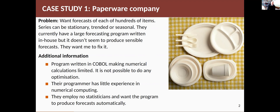The data was monthly and it could have trends, it could be seasonal — there were all sorts of different patterns in the data. They had a forecasting program written in-house, but they didn't trust the results. They said it was not giving sensible forecasts and they wanted to know if I could fix it. The program was written in COBOL, a very old computer language from the 1960s, which made numerical calculations quite difficult. So it wasn't possible to implement any forecasting model that needed optimization. Their programmer was an expert in COBOL but had very little experience in numerical computing, and they employed no statisticians. They wanted this program to produce forecasts completely automatically.